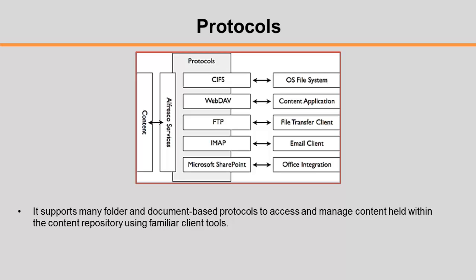The supported protocols include the common internet file system, which allows the projection of Alfresco as a native shared file drive. WebDAV and FTP are also supported. Alfresco presents itself as a mail server allowing clients like Microsoft Outlook, Apple Mail, and Thunderbird to connect and interact with folders and files held within the Alfresco content repository. IMAP is a prevalent standard for allowing email access services on a remote mail server. Microsoft SharePoint protocol enables Alfresco to act as a SharePoint server, creating tight integration with the Microsoft Office suite — very relevant in the context of most organizations today.